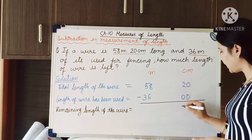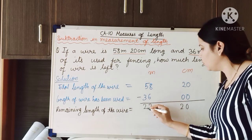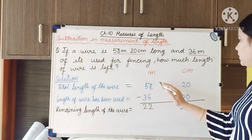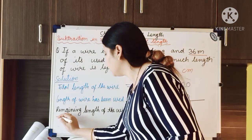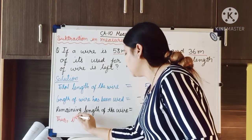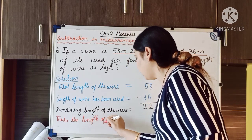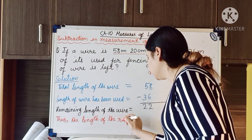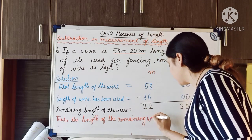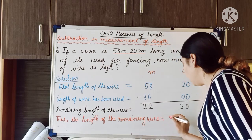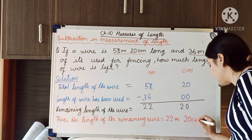0 minus 0 is 0; 2 minus 0 is 2; 8 minus 6 is 2; 5 minus 3 is 2. So the remaining length of the wire is 22 meter and 20 centimeter. Thus, the length of the remaining wire is equal to 22 meter and 20 centimeter.